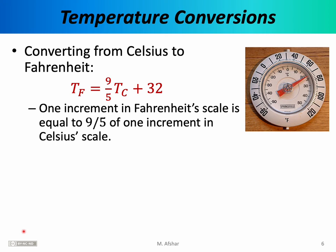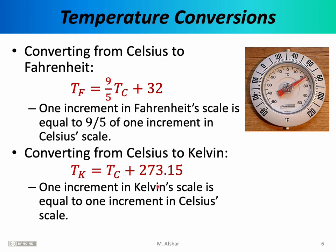You need to be familiar with all three temperature scales and be able to convert between them. Converting from Celsius to Fahrenheit uses this formula: T_F equals nine-fifths times T_C plus 32, where T_F is the temperature in Fahrenheit and T_C is the temperature in Celsius. Note that one increment in the Fahrenheit scale equals nine-fifths of one increment in the Celsius scale. To convert from Celsius to Kelvin, use the formula T_K equals T_C plus 273.15. One increment in the Kelvin scale is exactly equal to one increment in the Celsius scale, although the two scales have different zeros — offset by 273.15 degrees.